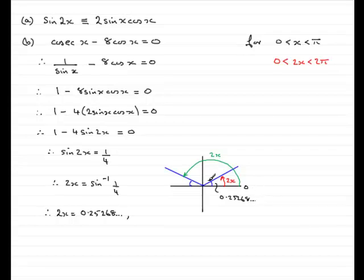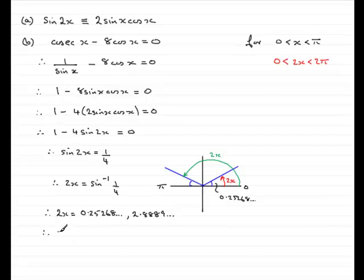We need to get the second value of 2x. The small angle in the second quadrant is also 0.25268, since we marked them as equal. We know that to go all the way around to pi radians is half the circle. So to get the green angle, we do pi minus 0.25268, which gives us 2.8889 radians. We now need to divide each of these by 2 to get x.